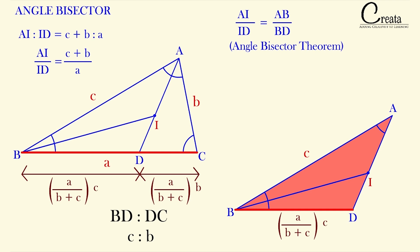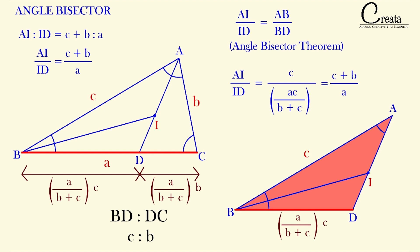So AI : ID = c / [(a · c) / (b + c)]. Solving this, AI : ID = (b + c) / a. This completes the proof of our property.